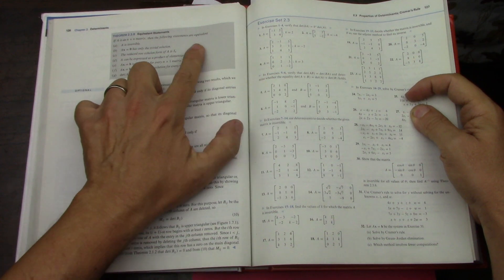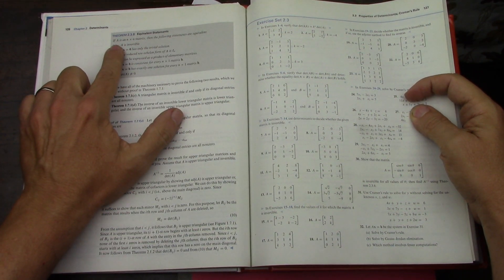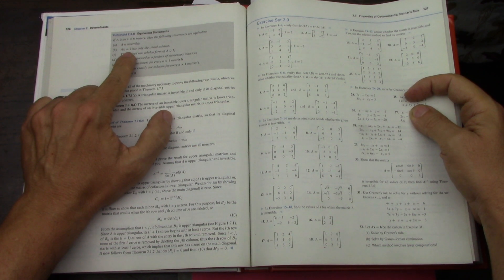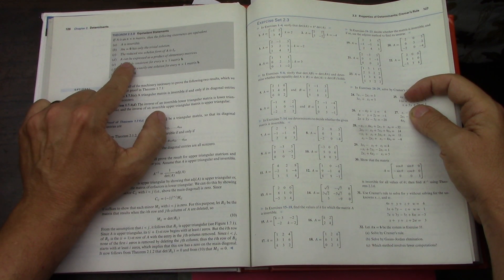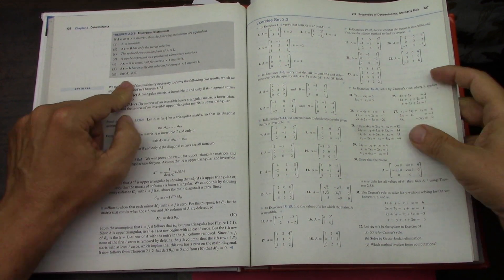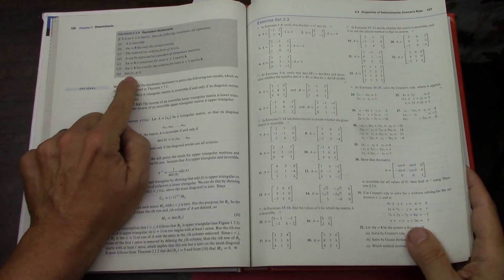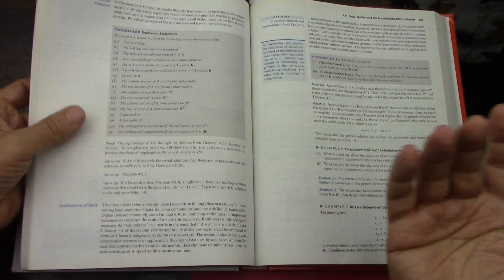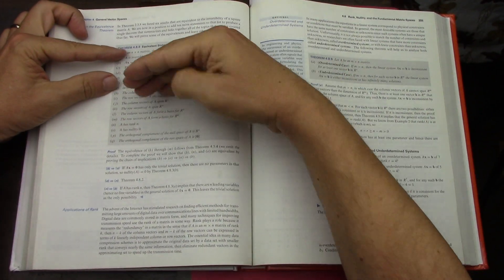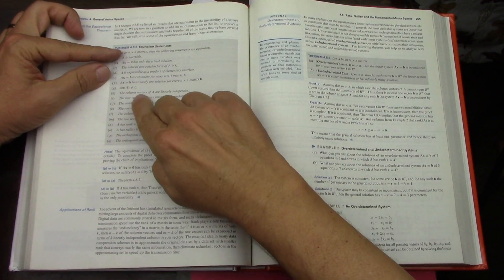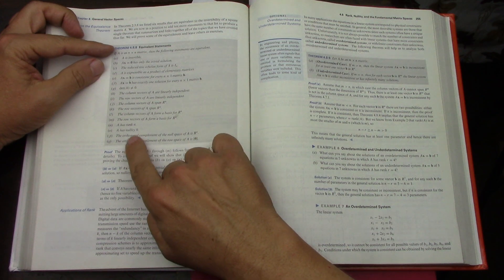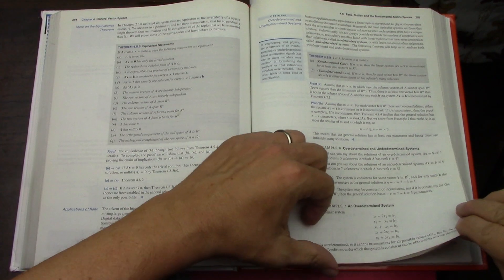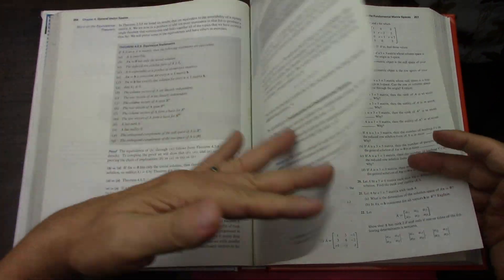There's all these equivalent statements that add to theorem 2.38. Way back when, 2.38 said a bunch of equivalent statements about a square matrix: it's invertible, has a trivial solution for the homogeneous case, and other features including the determinant is not equal to zero. We've seen this before. Then you add a bunch of other stuff having to do with column vectors, row vectors, rank and nullity, and then orthogonal complements.